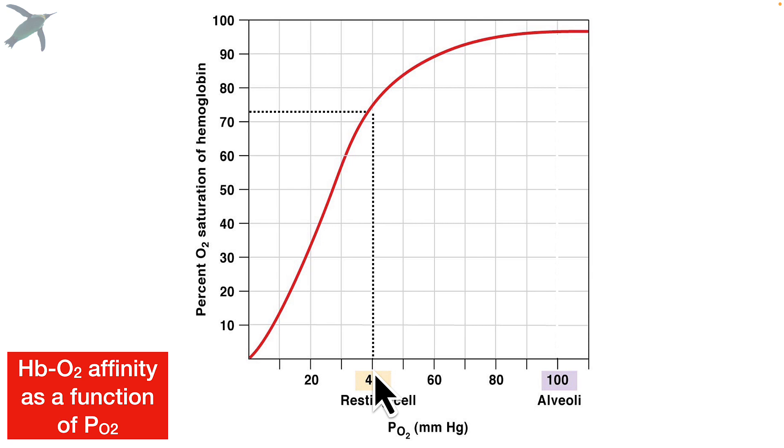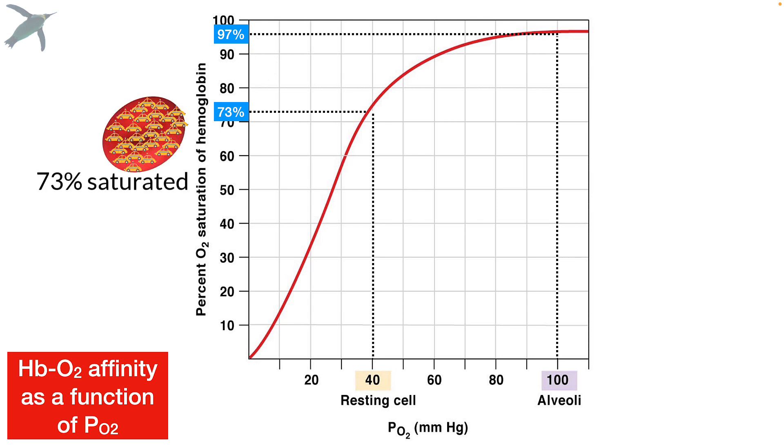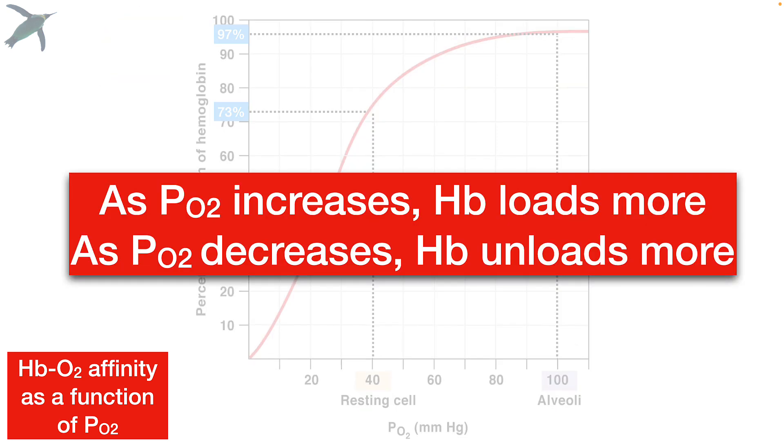So let's see how we read this. At a typical resting cell PO2 of about 40 millimeters of mercury, you come up and you see where 40 intersects this curve. You'll notice it is a sigmoidal shaped curve. And then you go across and see where it hits the y. And that is somewhere around, let's call it 73%. So what does that mean? It means that when the hemoglobin is exposed to a PO2 of 40, 73% of all the seats are occupied with oxygen. What about in the alveoli? At 100 millimeters of mercury, we come up, we see where it hits the curve, and then we draw to the left. And we read that at about 97%. So this means 73% saturated at a PO2 of 40 and 97% saturated at a PO2 of 100.